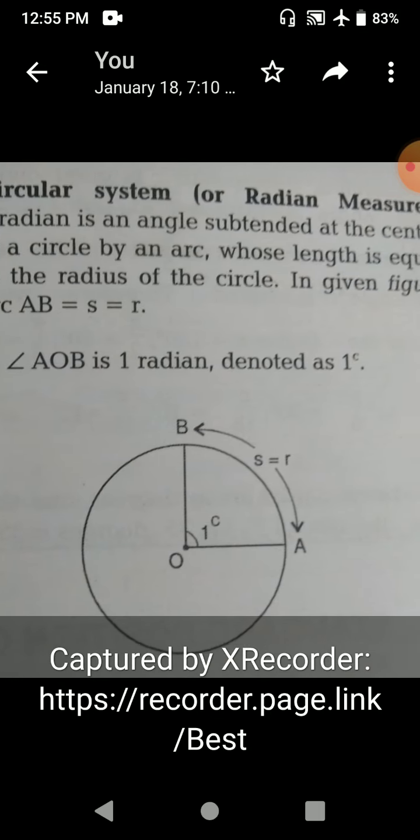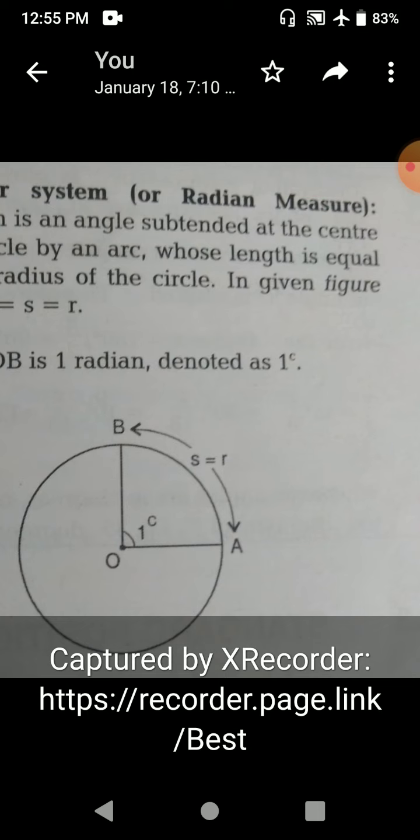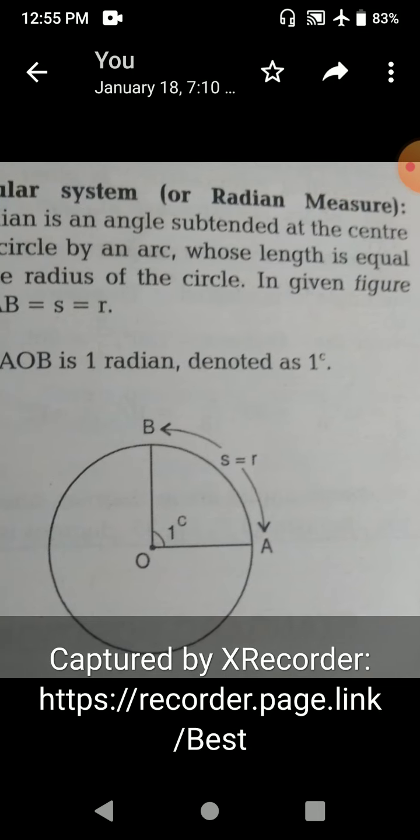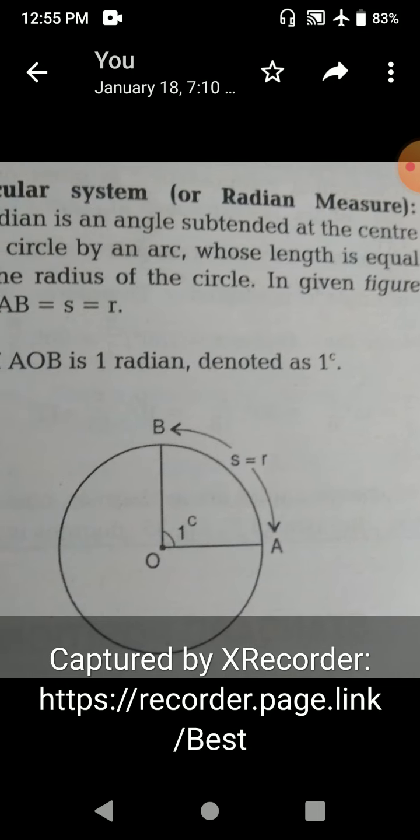So now, how much is one radian? We will see. First, look at this figure. Here I have a circle, and the radius of that circle may be equal to R. The curve AB is known as arc, A-R-C.